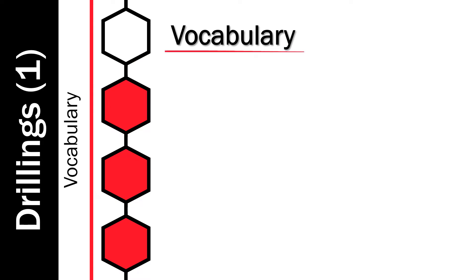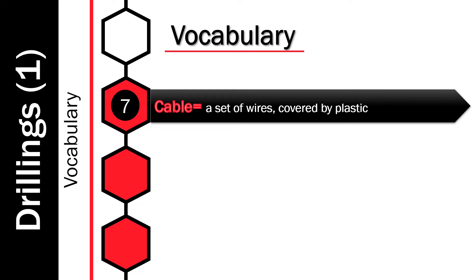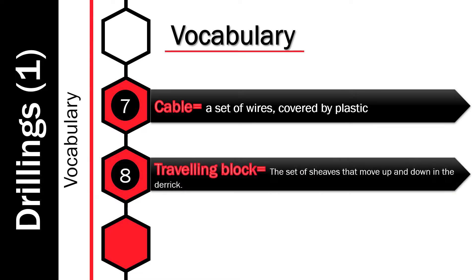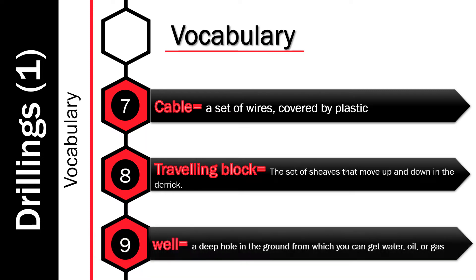Now let's move to number 7: Cable — a set of wires covered by plastic. Number 8: Traveling Block — a set of sheaves that move up and down in the derrick. And number 9: Well — a deep hole in the ground from which you can get water, oil, or gas.